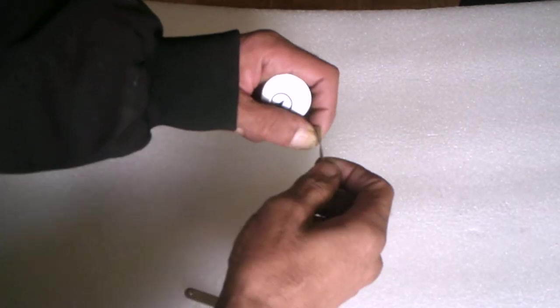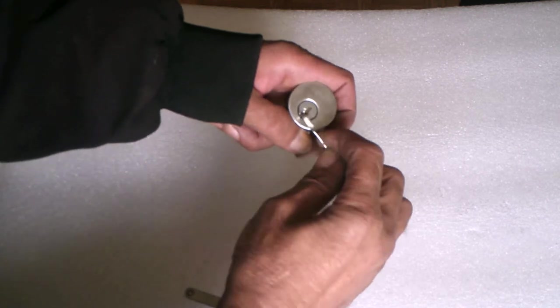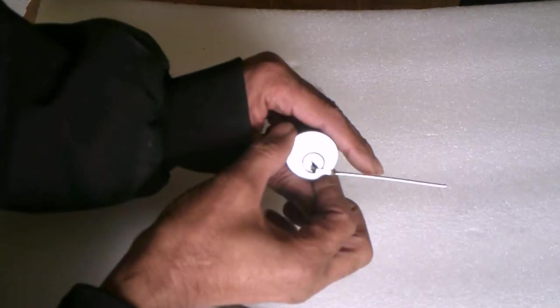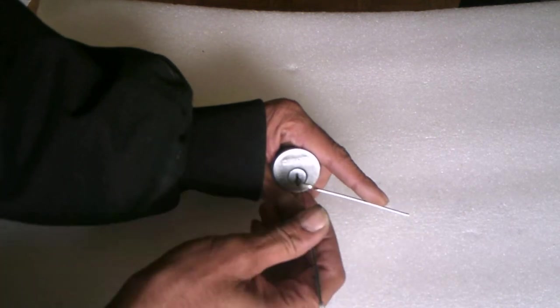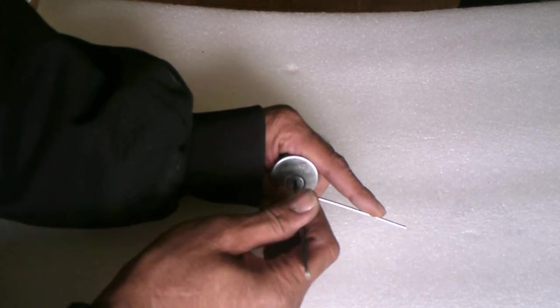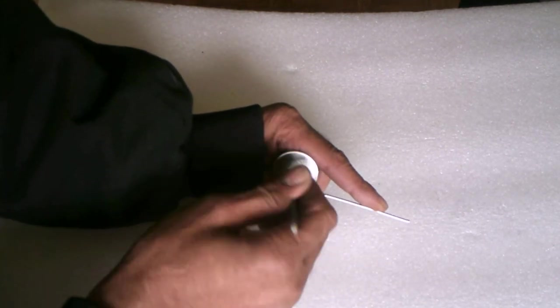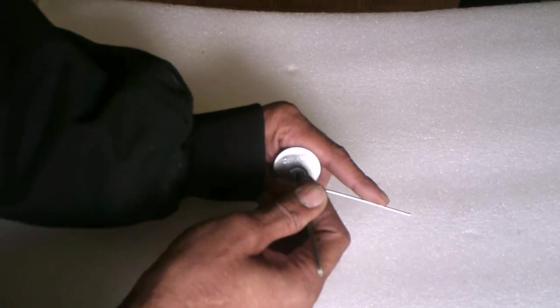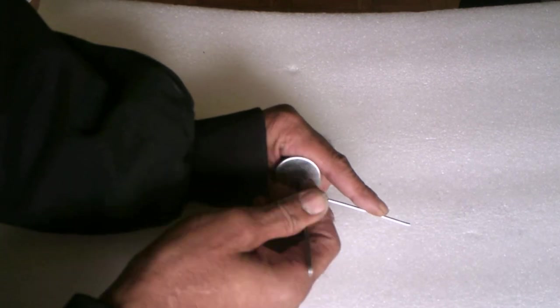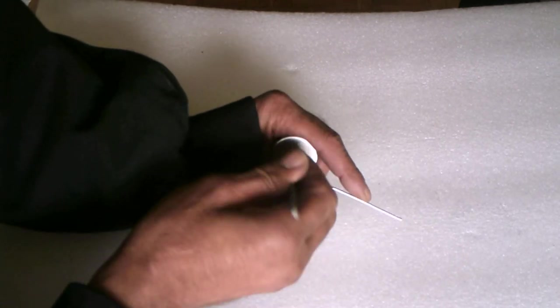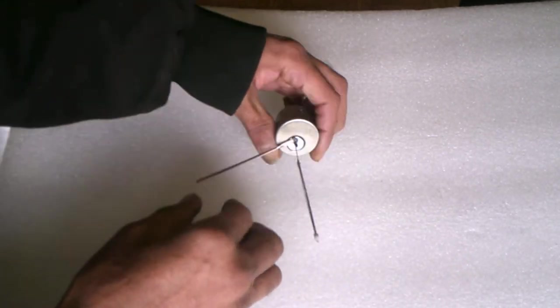So, let's put the tension wrench in the bottom of the keyway, like so. And then we're going to take our pick and start with it. And, I'm feeling the pins in there. There's five of them in there. I'm feeling the pins, and boom, there it is. It's open.